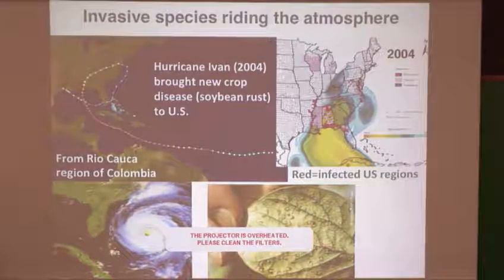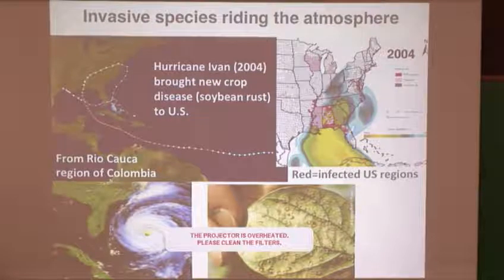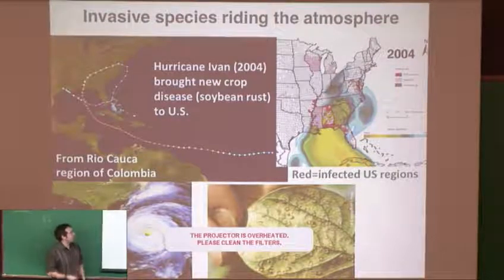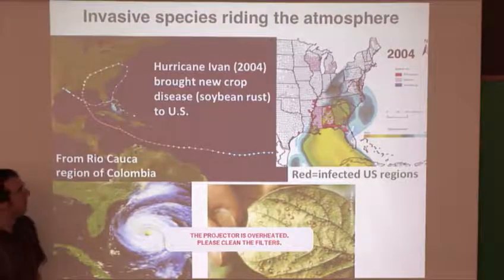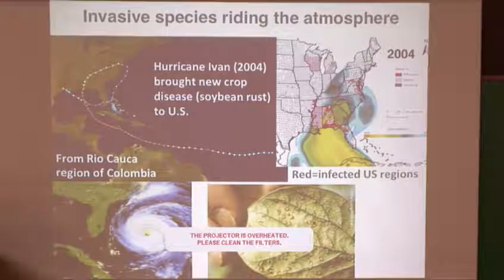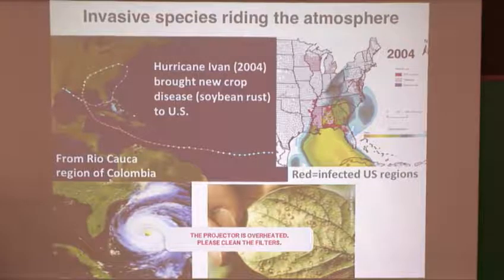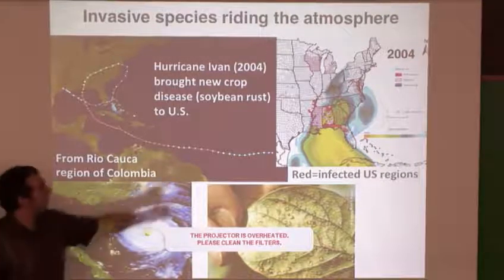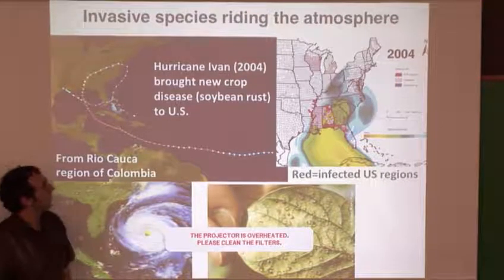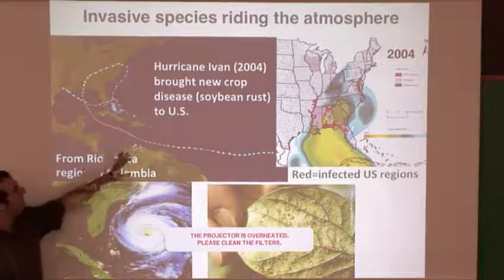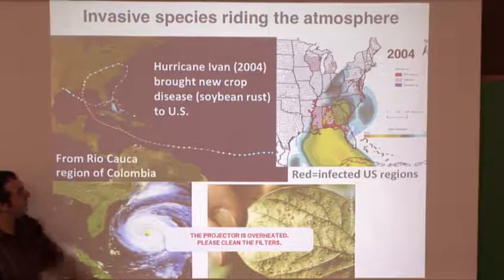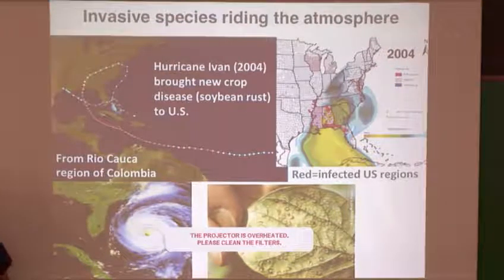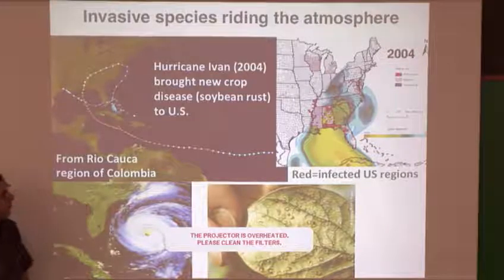To motivate why we want to talk about geophysical transport structures and ecology, here is a notable case of an invasive species that came in on a coherent structure — a hurricane. This is Hurricane Ivan in 2004, which took a far south path and is believed to have picked up a new disease from Colombia.